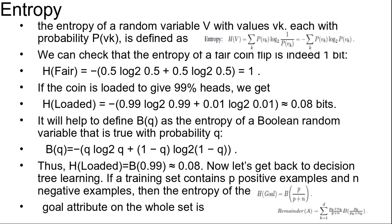Now, let's get back to decision tree learning. If a training set contains p positive examples and n negative examples, then the entropy of the goal attribute on the whole set is H(Goal) equals B(p/(p+n)).